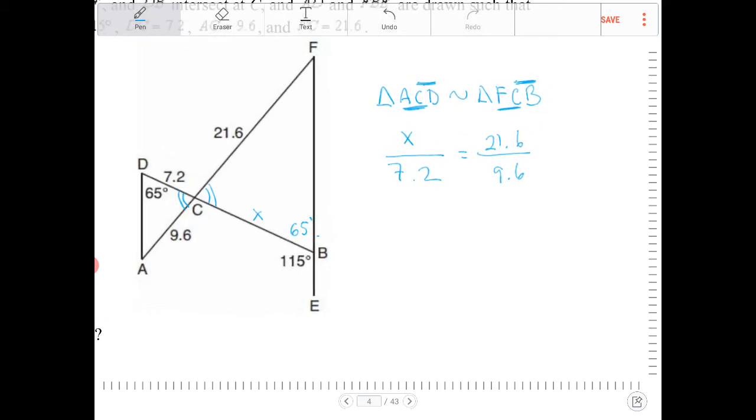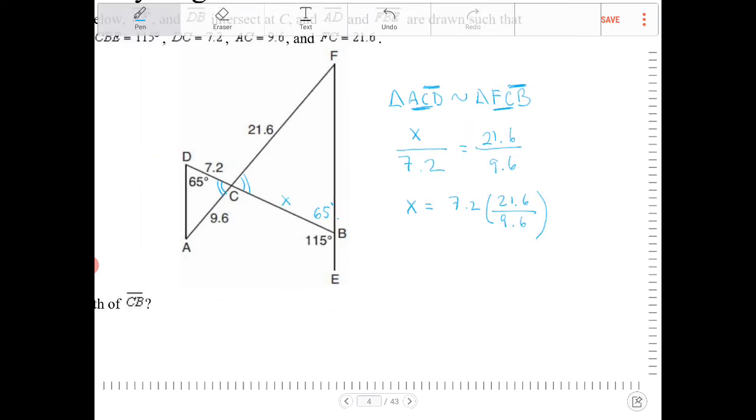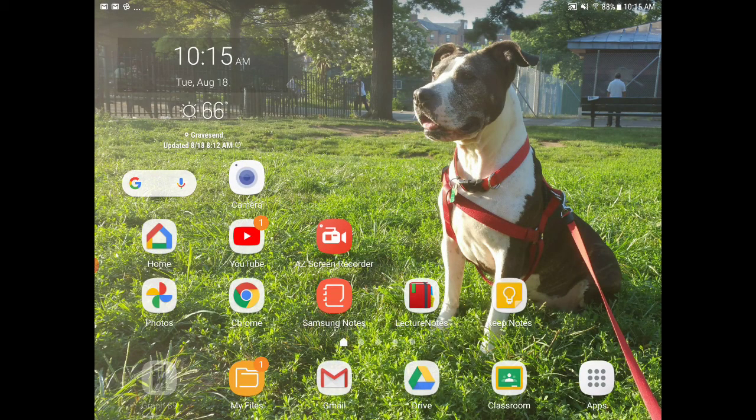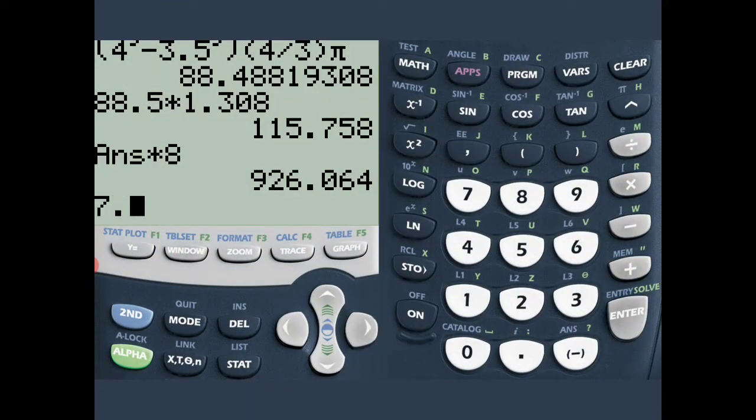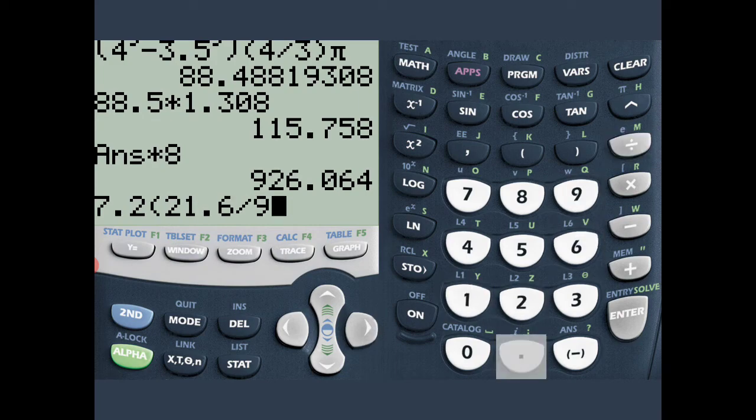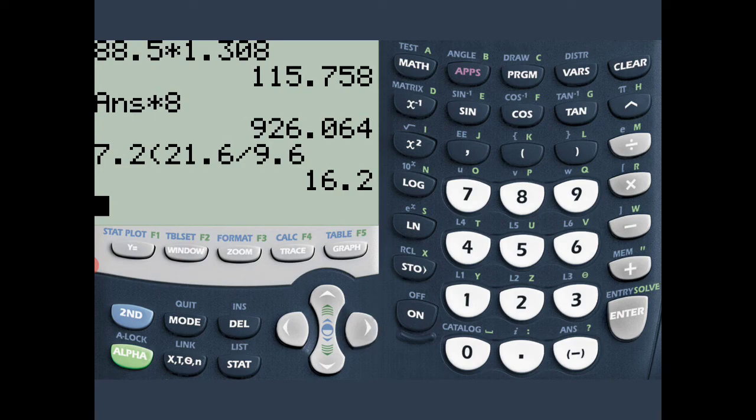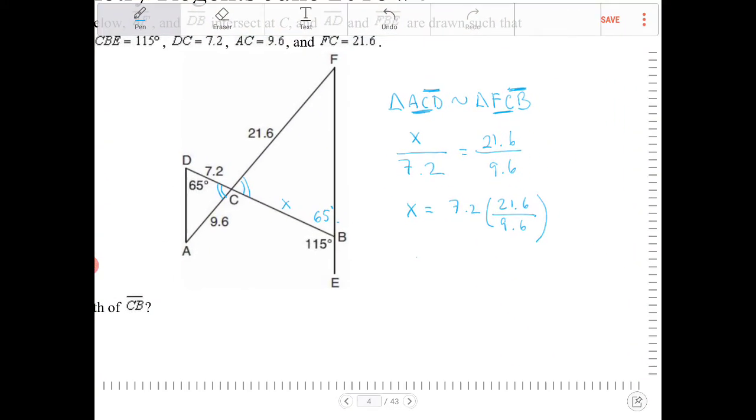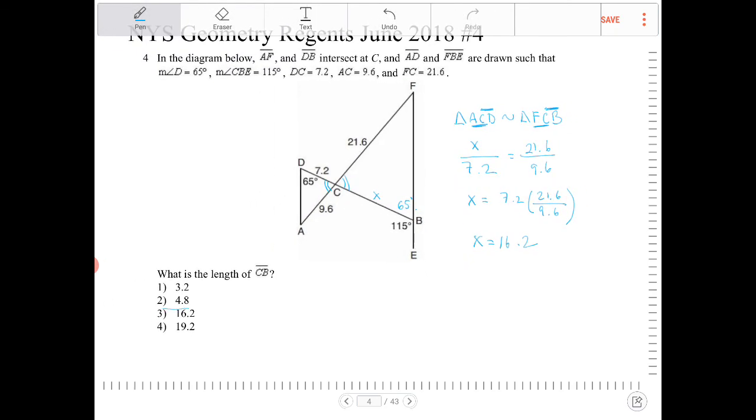So now I can multiply both sides by 7.2. So 7.2 times 21.6 over 9.6. I'm going to multiply this using my calculator. 7.2, 21.6, 9.6. And I get 16.2. So X is equal to 16.2. And that would be option 3 then.